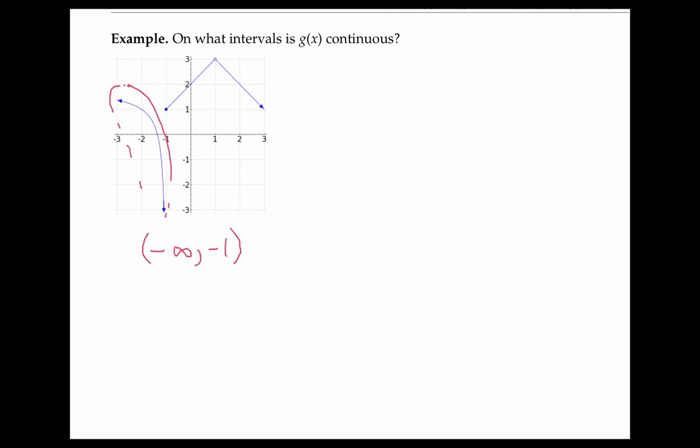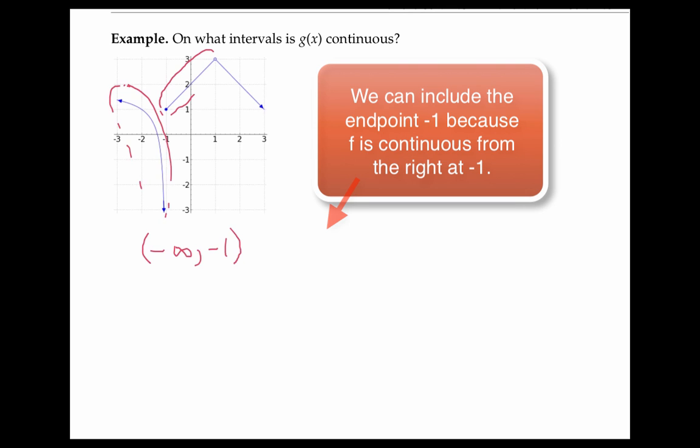It's also continuous here, and we can include the endpoint this time, so this is from negative one to one. And then again, on this last section, we can't include one, it's not continuous there. It's not even defined there.